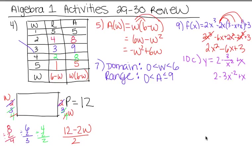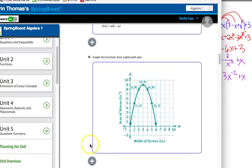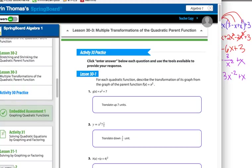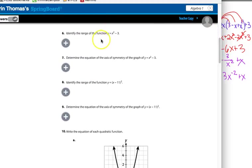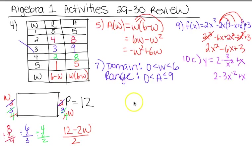Next section is from Activity 30, where we're asked for some key features. Starting with number 6, it asks us to identify the range and determine the equation of the axis of symmetry. The equation is y = x² − 3. You can graph it if you want, but it doesn't ask you to — just asks for the range.